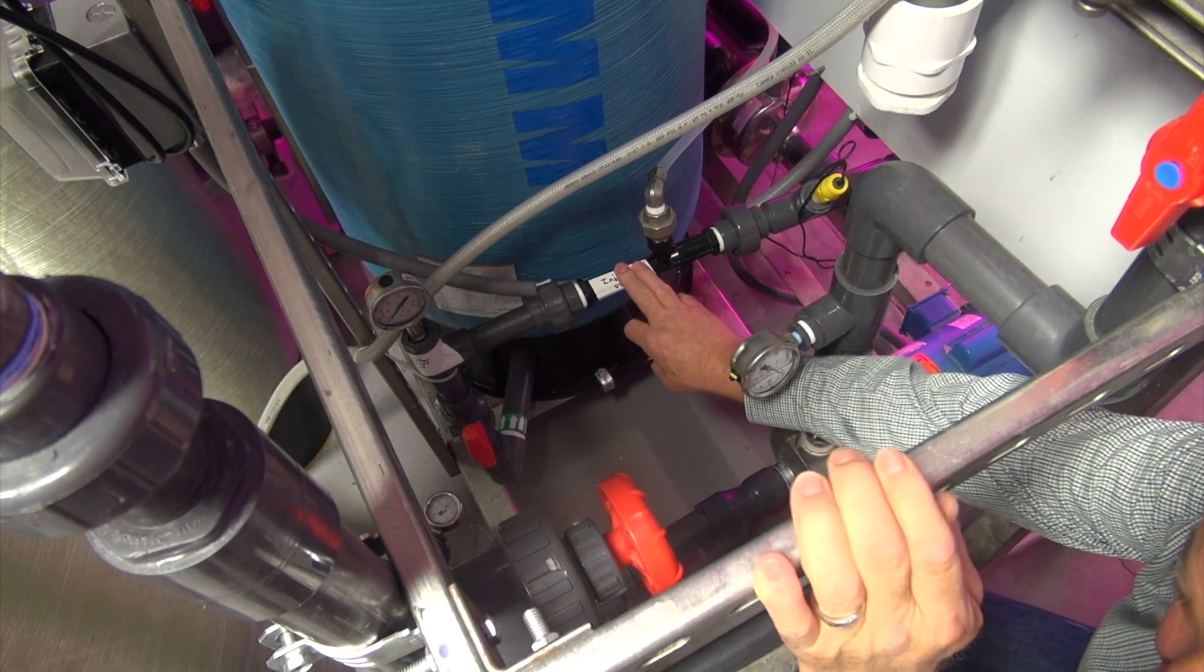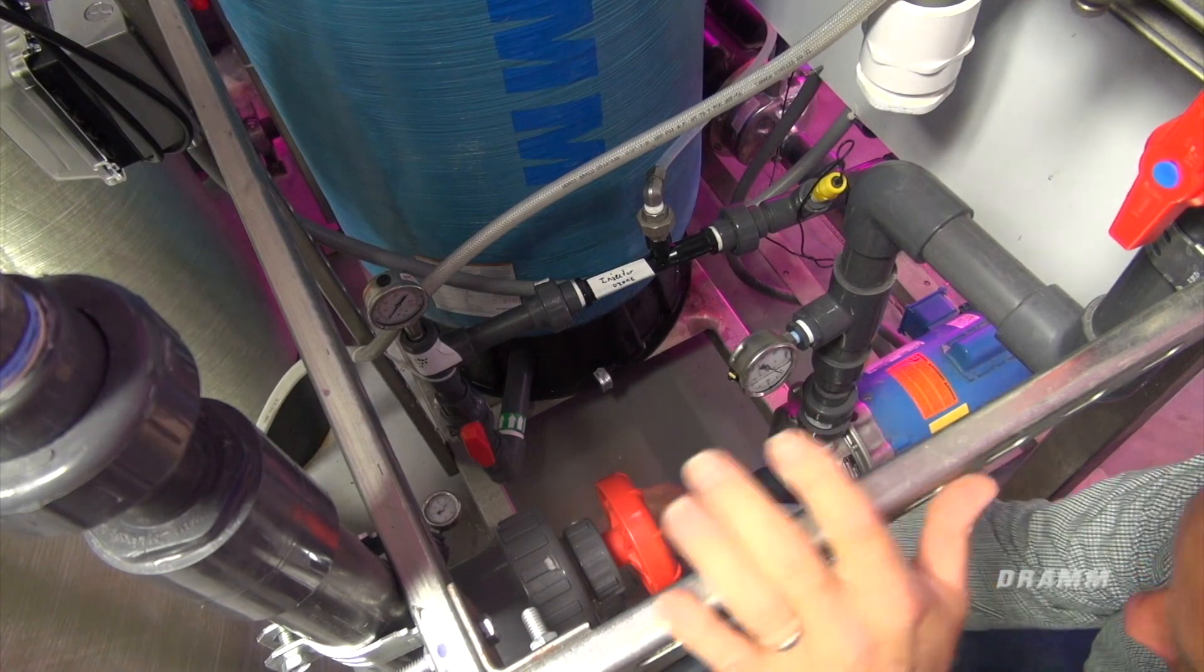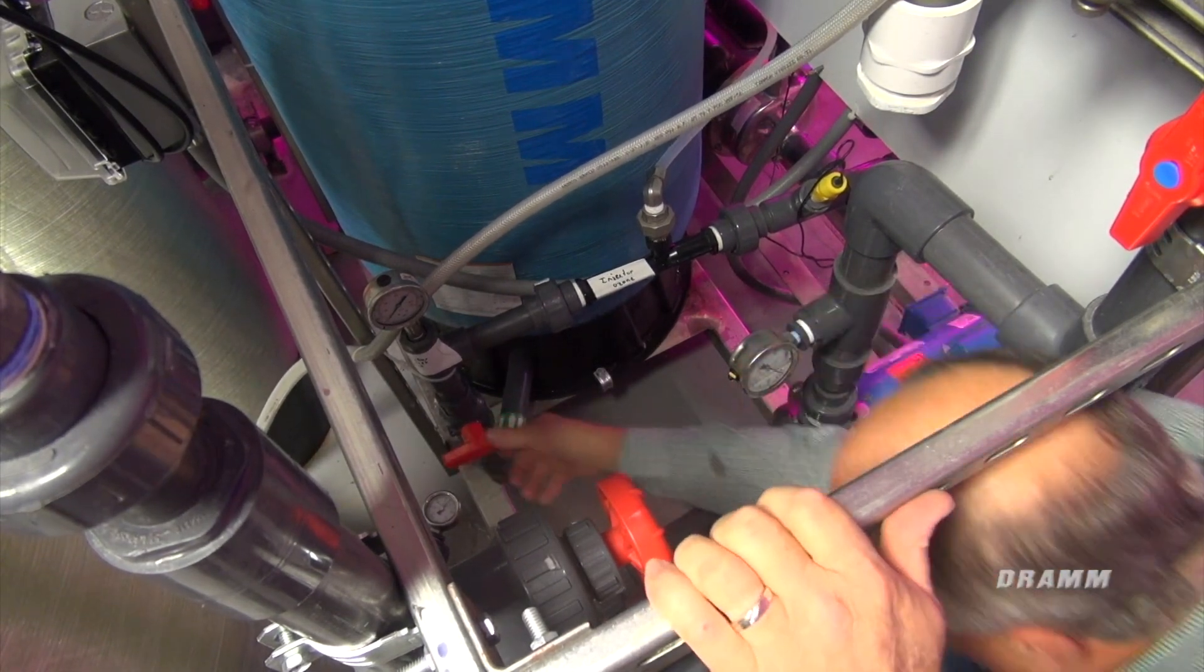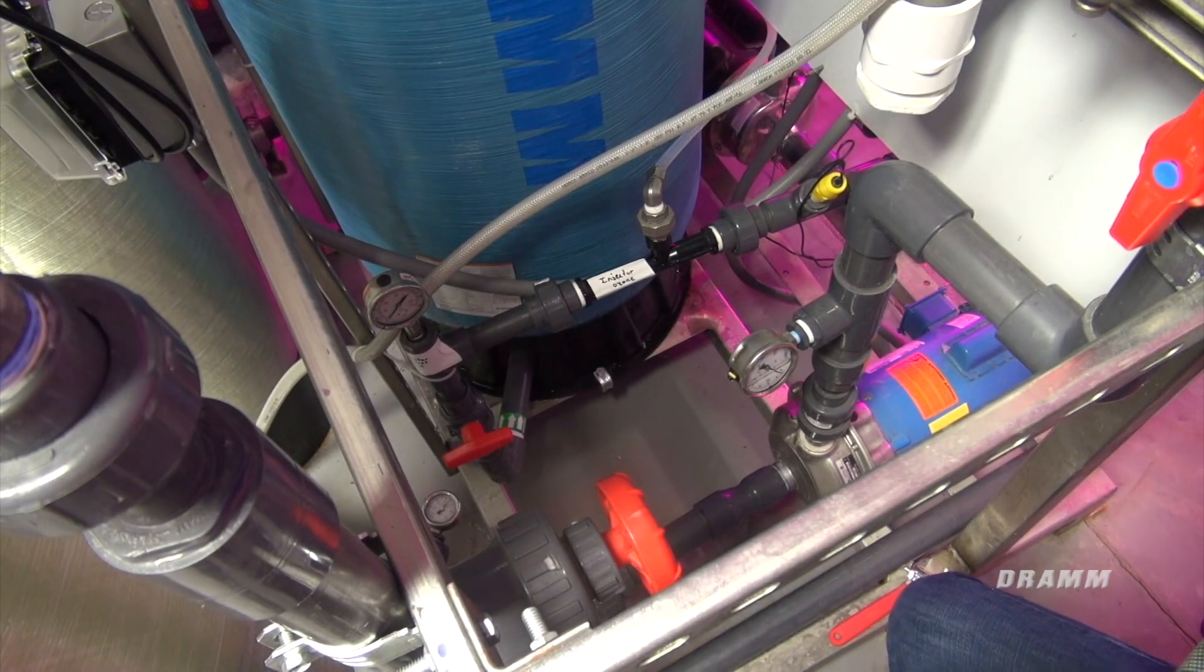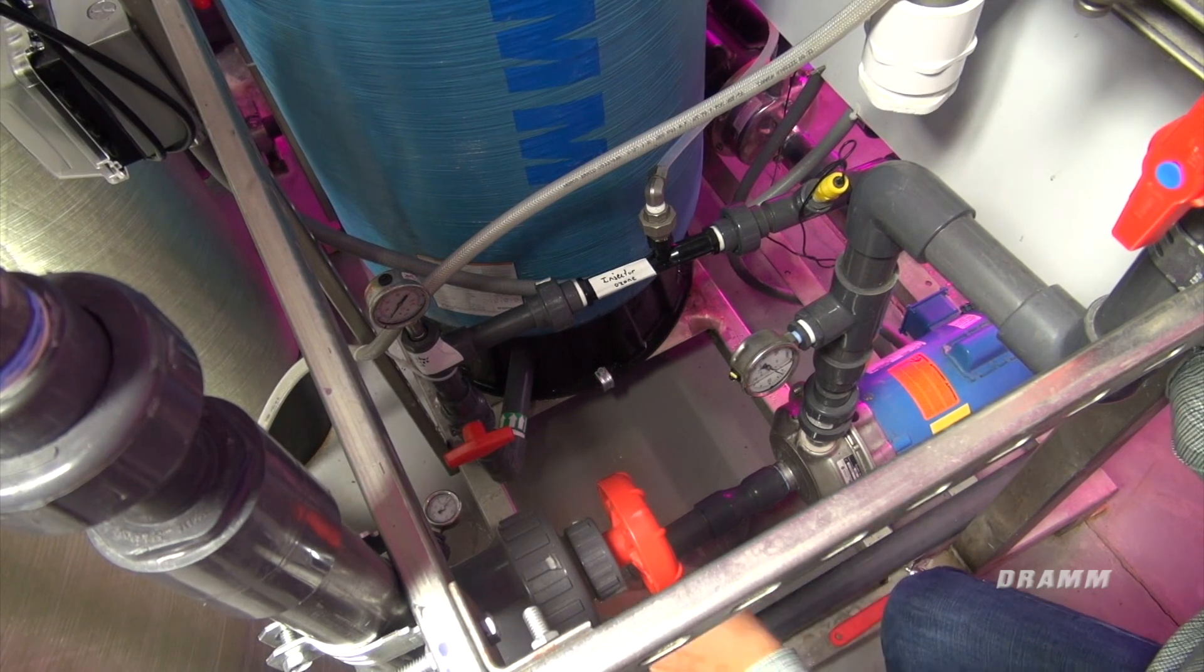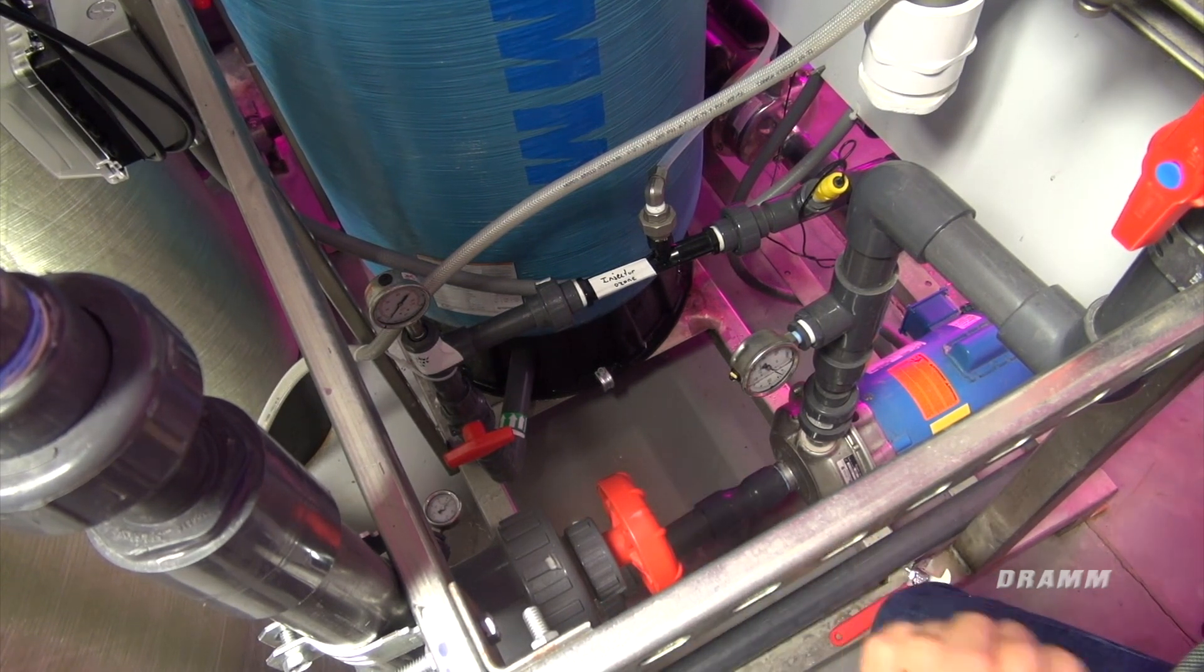All right, we're going to clean out the injector. We've got to remove the injector first. In order to do that, we're going to turn off the valves. We've already turned off the ozone generator and the oxygen concentrator, and it's pumped so we're not flowing water through. And we're going to turn off the valve from the tank so we have no water flowing through.